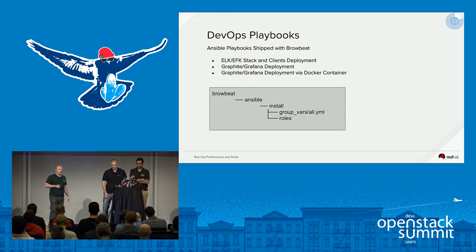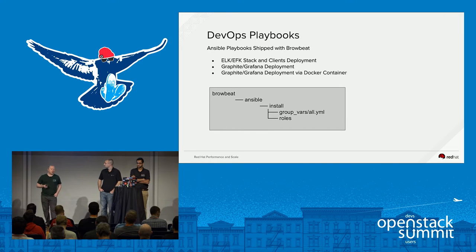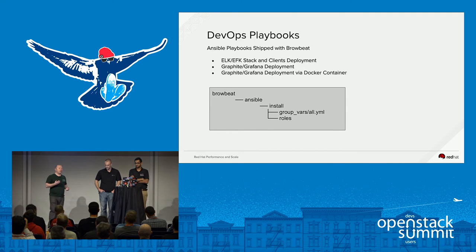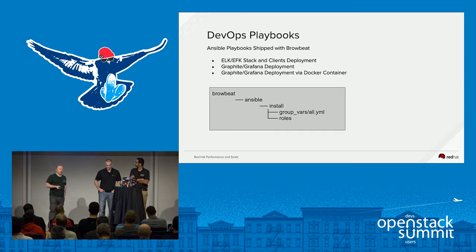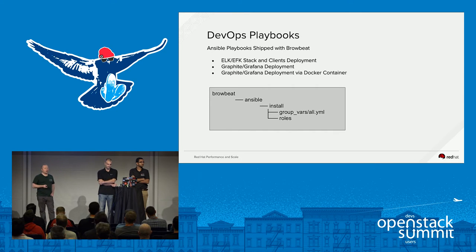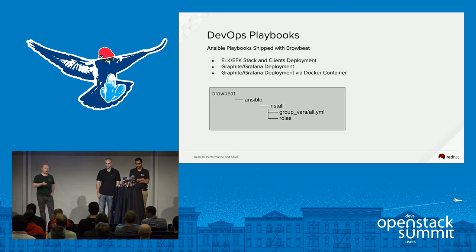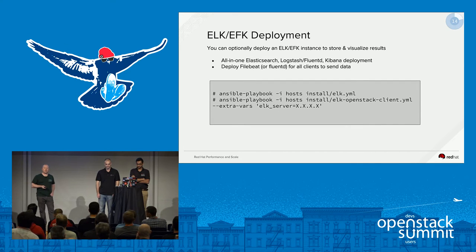We ship optional playbooks with BrowBeat to very quickly spin up ancillary infrastructure - the ELK stack, Grafana, Graphite - some of the bread-and-butter tools we use to visualize metrics and performance data. We ship two different playbooks: an entire ELK stack where you have the option of using Elasticsearch, Logstash, and Kibana, or you can use FluentD. We also ship Graphite and Grafana with an optional ability to use a Docker container if you prefer that.